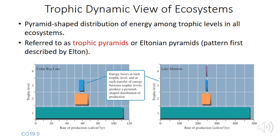These energy losses mean that when we graph the distribution of energy among trophic levels in ecosystems, we always get relationships called trophic pyramids or Eltonian pyramids, named after Charles Elton who first suggested this pattern. Most of the energy in ecosystems occurs in primary producers, with significantly less energy at each trophic level above that.